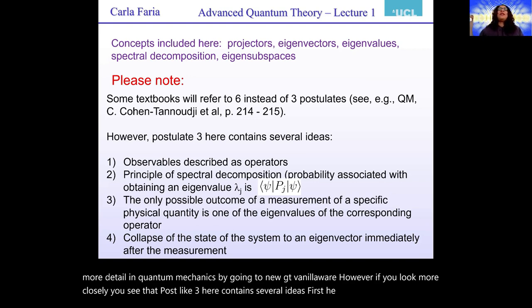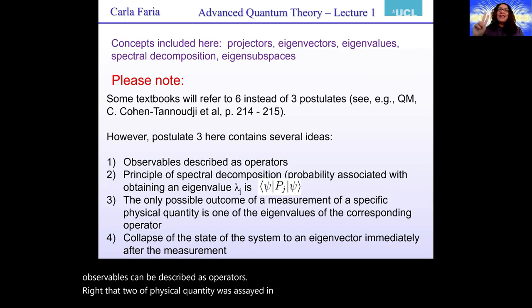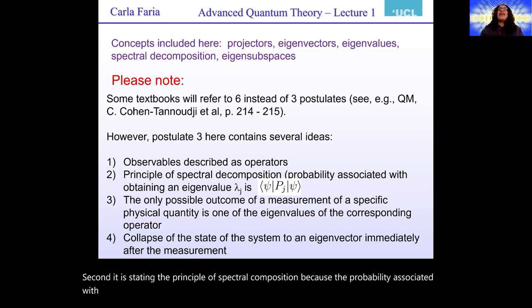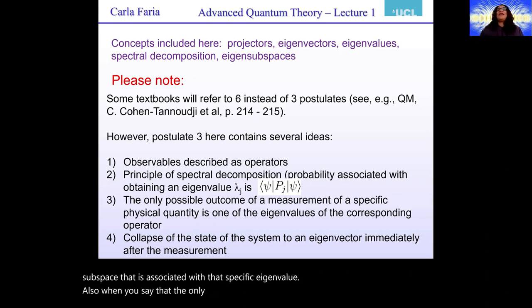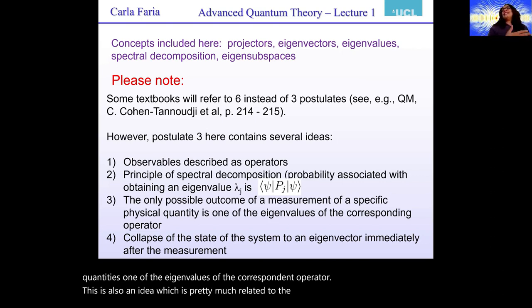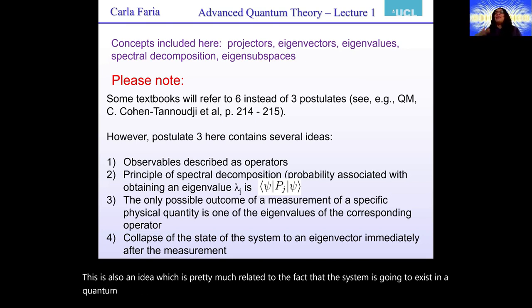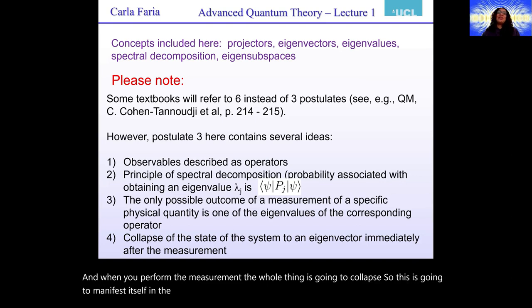First, it contains the idea that observables can be described as operators, right? That to a physical quantity associated an operator. Second, it is stating the principle of spectral decomposition because the probability associated with obtaining an eigenvalue lambda j is psi pj psi. So you're projecting onto that eigensubspace that is associated with that specific eigenvalue. Also, when you say that the only possible outcome of a measurement of a specific physical quantity is one of the eigenvalues of the corresponding operator, this is also an idea which is pretty much related to the fact that the system is going to exist in a quantum superposition, maybe. And when you perform the measurement, the whole thing is going to collapse.